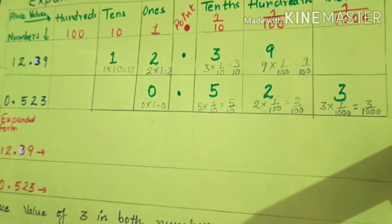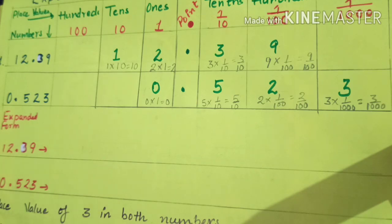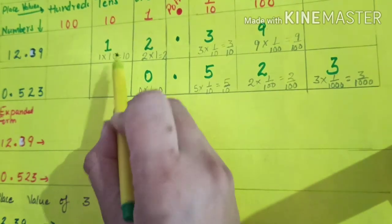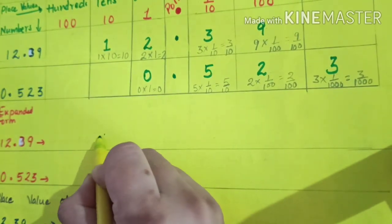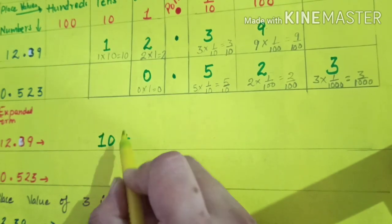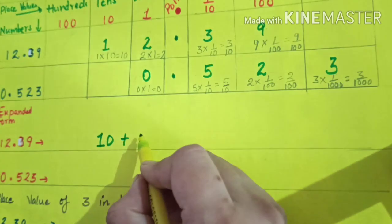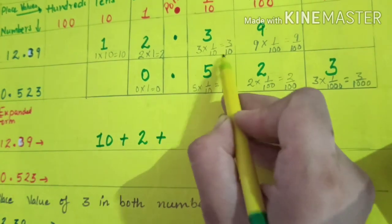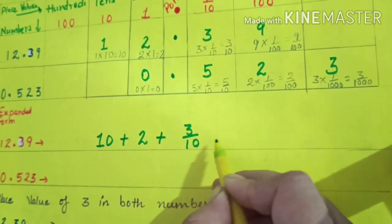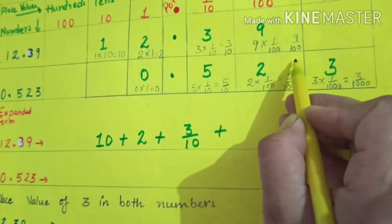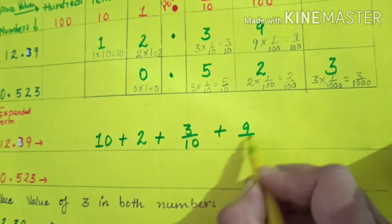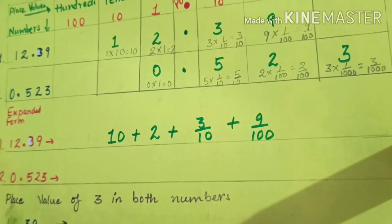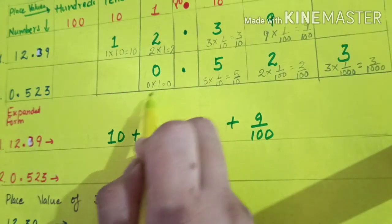To find the expanded form, we just add the place values of all the digits. The expanded form of 12.39 is: ten plus two plus three over ten plus nine over one hundred. This is the expanded form of 12.39. Similarly for 0.523, zero multiplied by one is zero, so the place value of zero is zero — no need to write that.